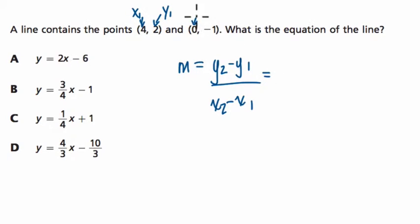Then that means that 0 here is x2, and negative 1 is y2. Now I just plug the formula in, y2 minus y1, so negative 1 is y2, y1 is 2, so it's negative 1 minus 2, divided by 0 minus 4.